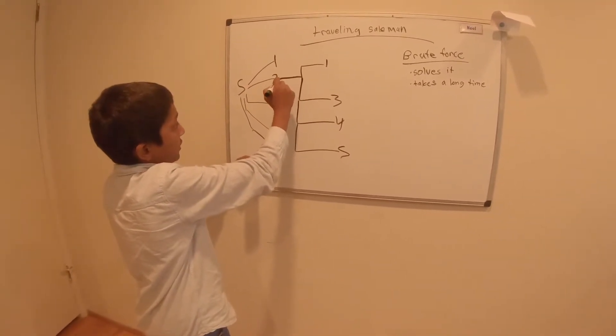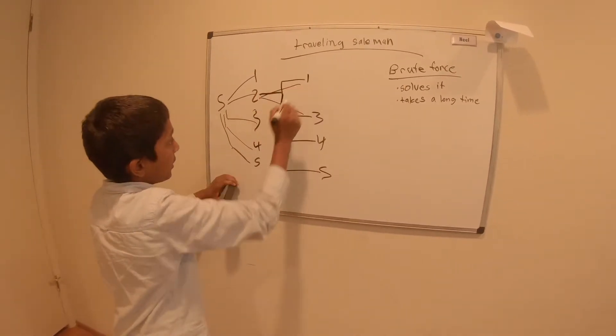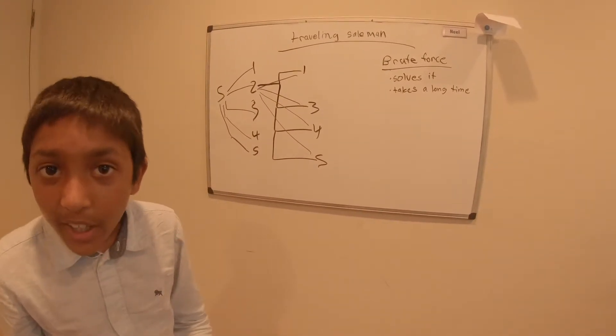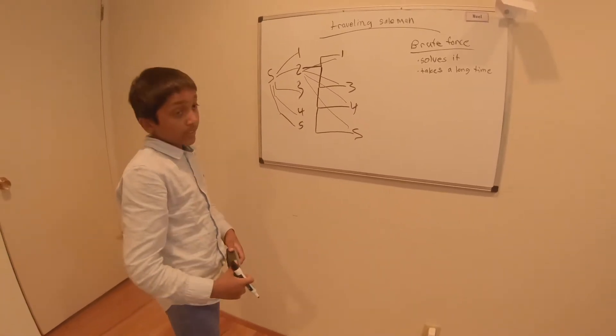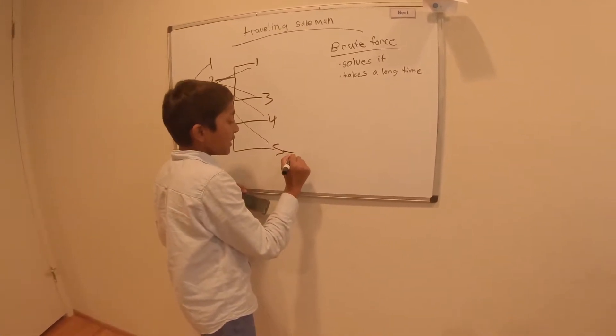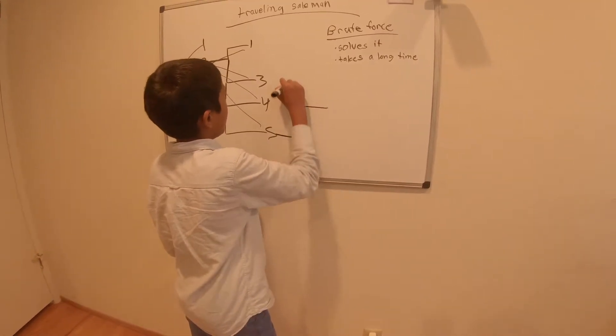Now you do the time from two to three, two to one, two to four, and two to five. Whichever one is closest, let's say five, then this is your next. So then you repeat it again.